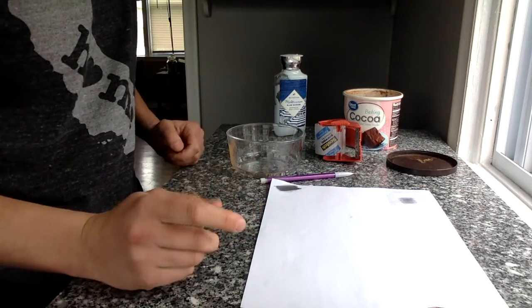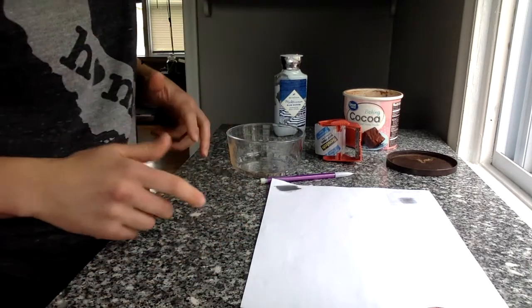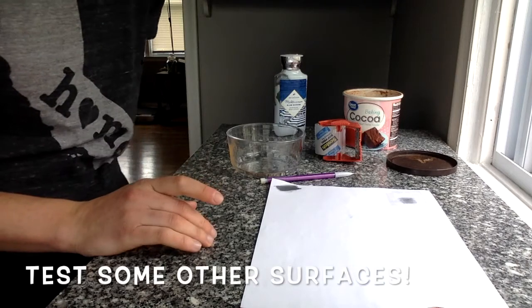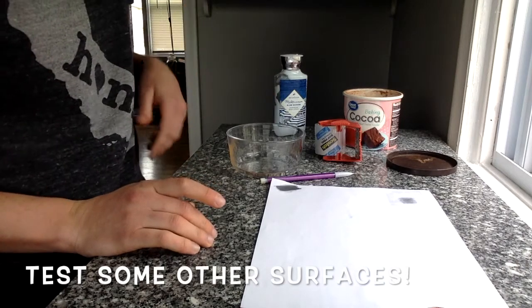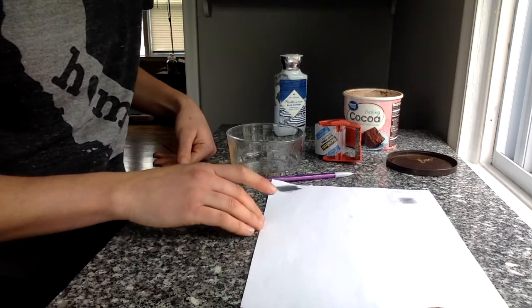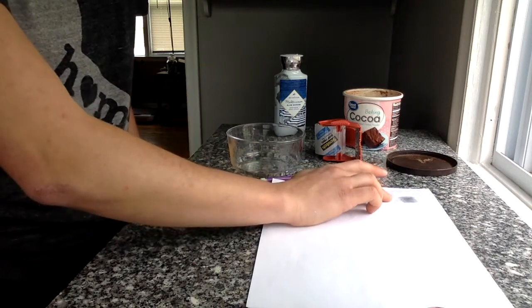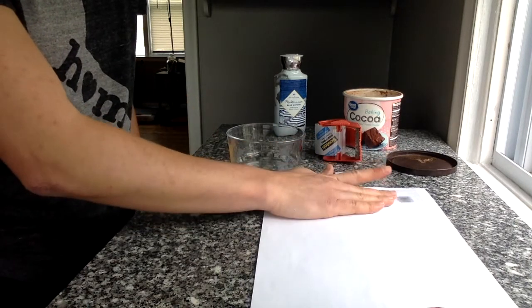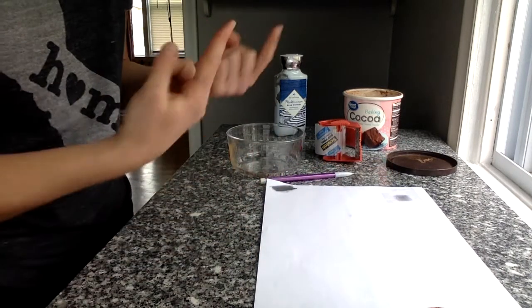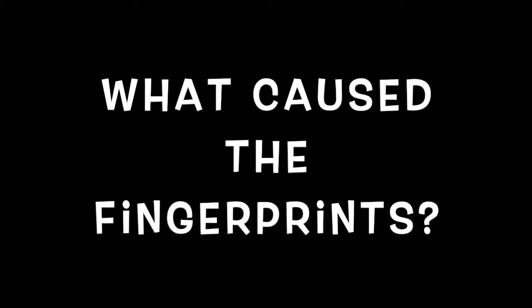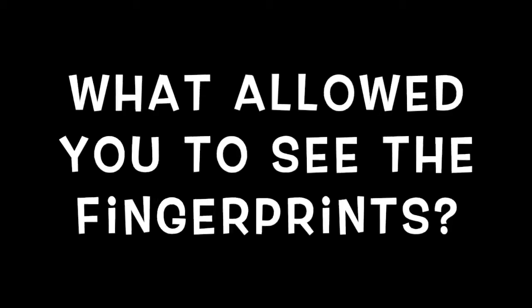Once you've got that, go ahead and, with parent permission, see if you can test some other surfaces like doorknobs or faucets and find out if you can match your known fingerprints to the unknown fingerprints that are around the house. I want you to think about this question: What caused the fingerprints, and what allowed you to see the fingerprints?